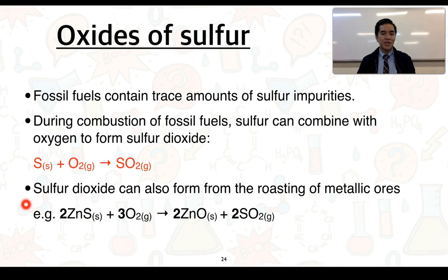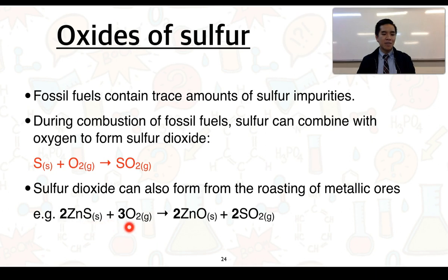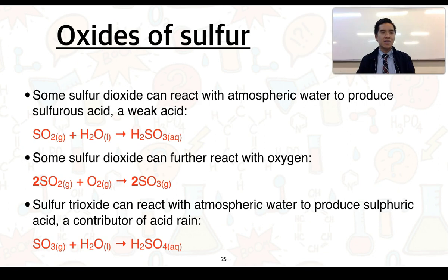Sulfur dioxide can also form from the roasting of metallic ores. These processes are often used to extract metals from their ores. This reaction shows the roasting of zinc sulfide in oxygen to produce zinc oxide but also sulfur dioxide gas.